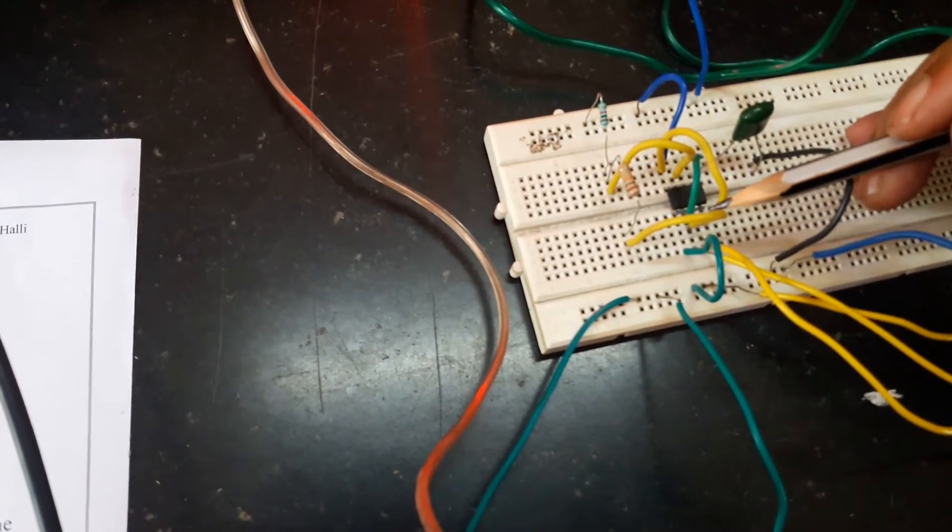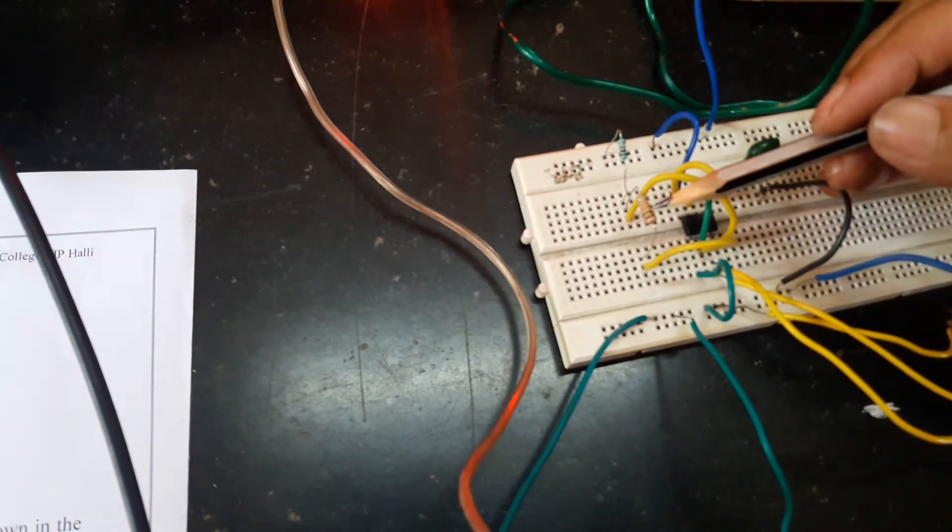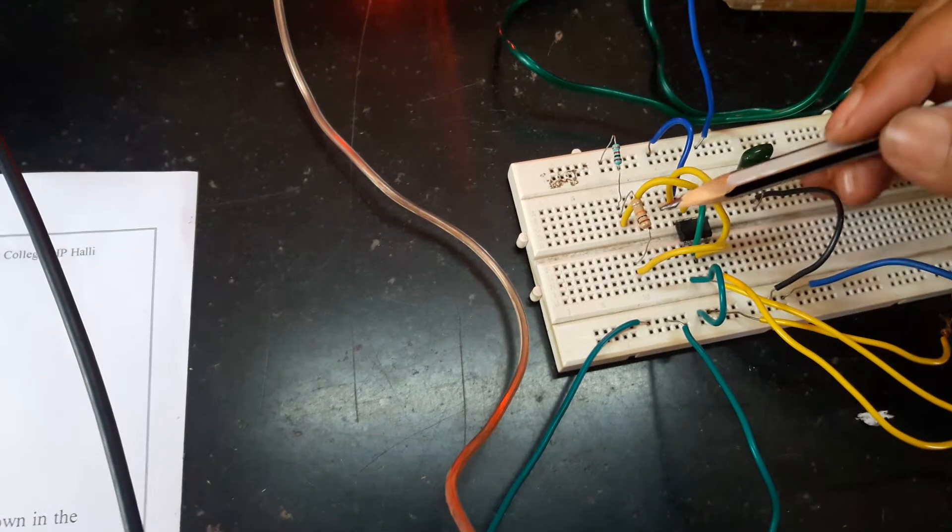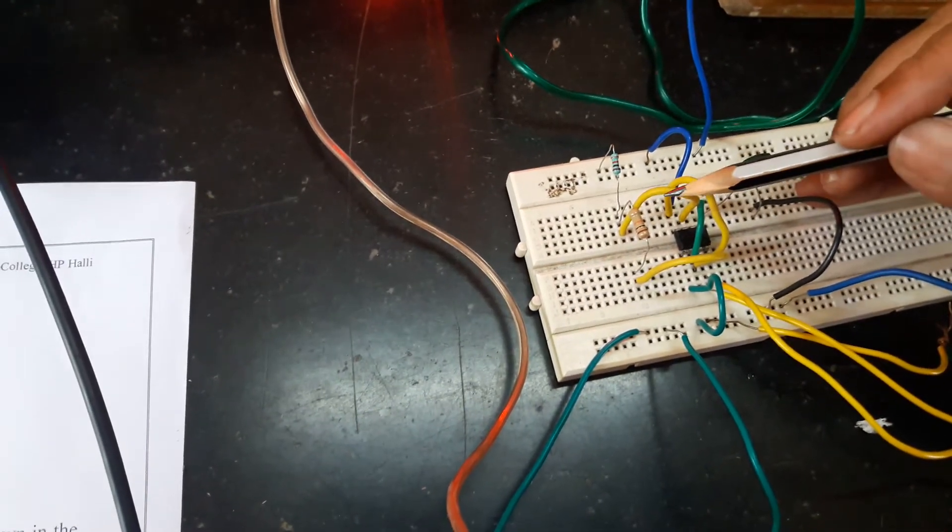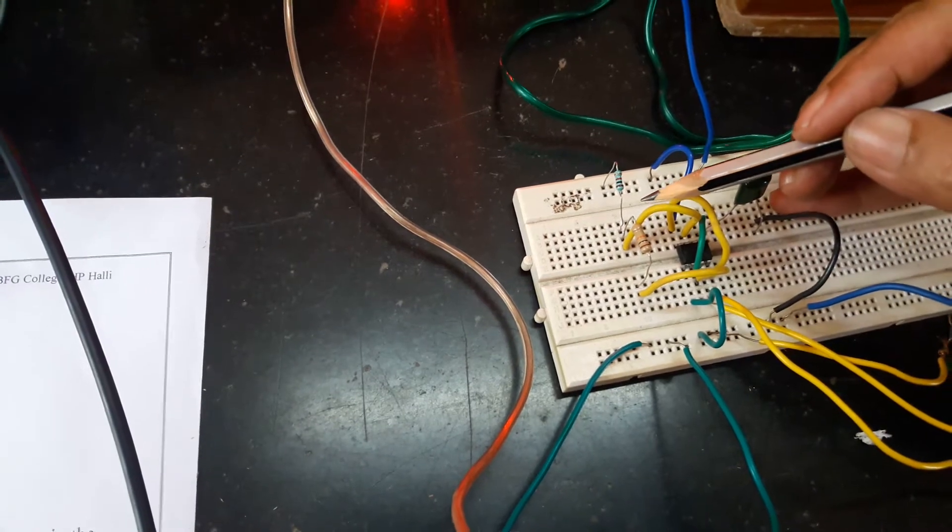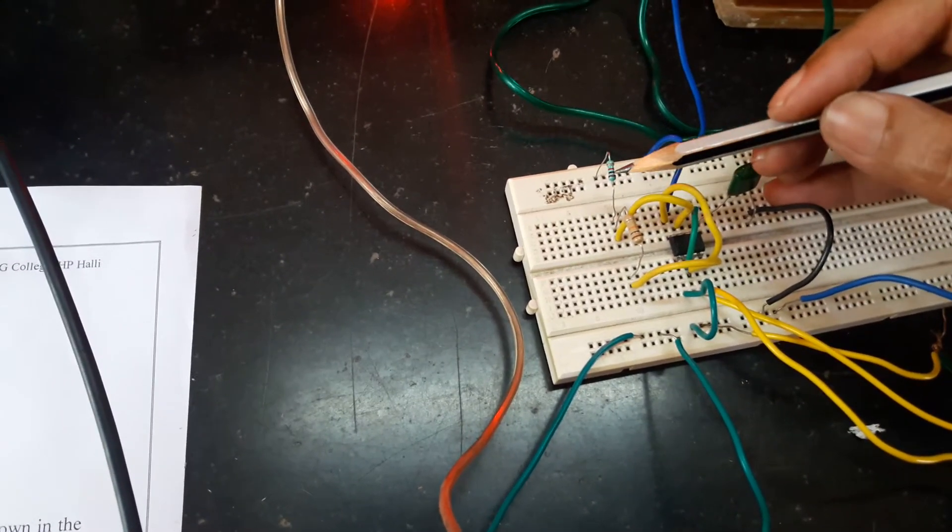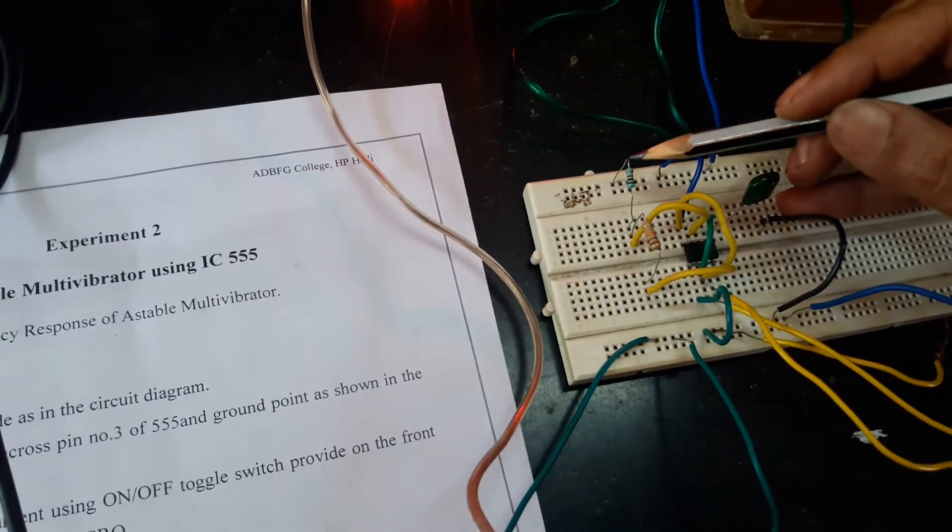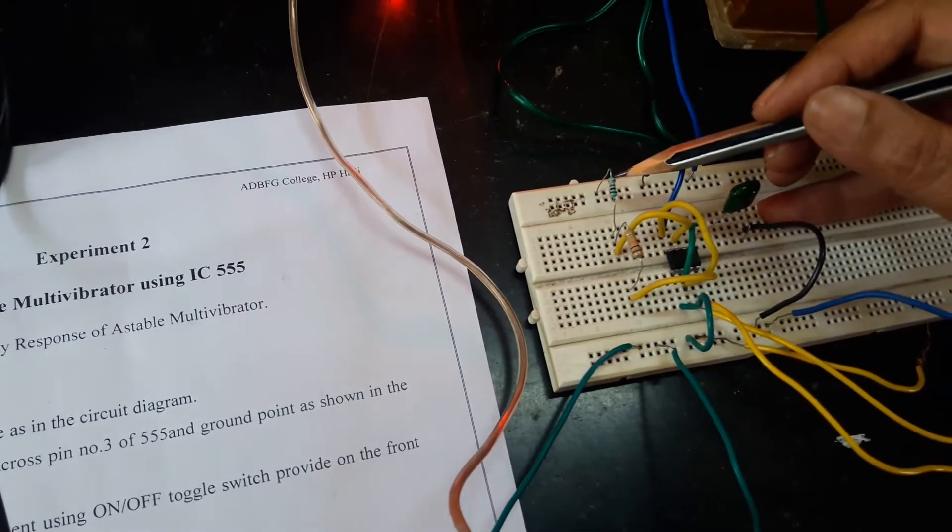From the same pin 2, you should connect it to RB, which is 10 kilo ohms. Then, another end of RB is connected to pin number 7. From the same RB, another end, 1 kilo ohm, which is nothing but RA, which in turn connected to plus Vcc.